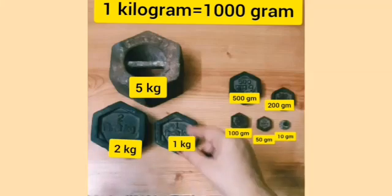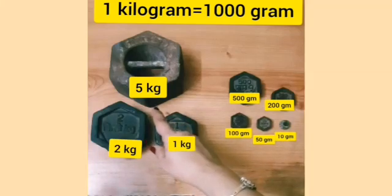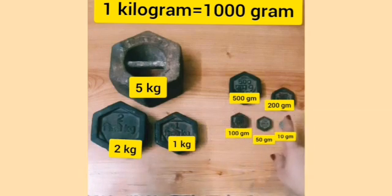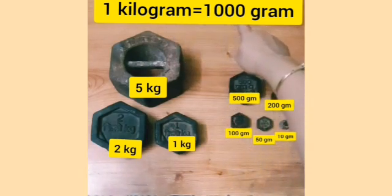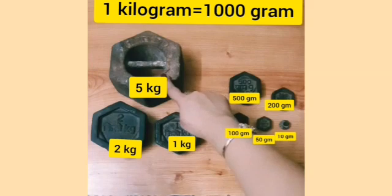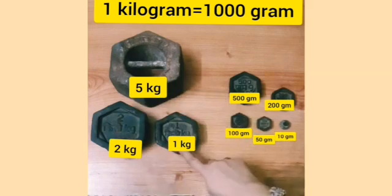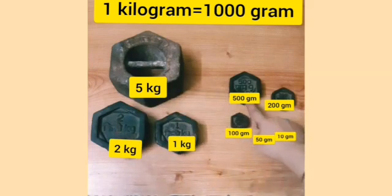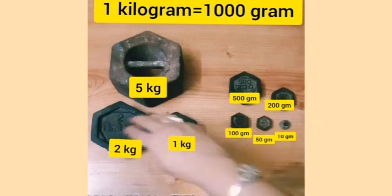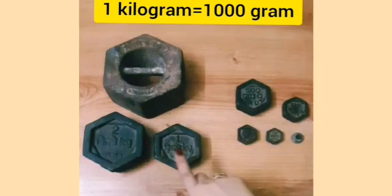Till now you have learned that we measure things in kilograms and grams, and 1 kilogram is equal to 1000 grams. To measure weight, we use these standard weights like 5 kilogram, 2 kilogram, 1 kilogram, 500 gram, 200 gram, 100 grams, 50 grams, and 10 gram. Let's learn how to measure weight with the help of these standard weights.